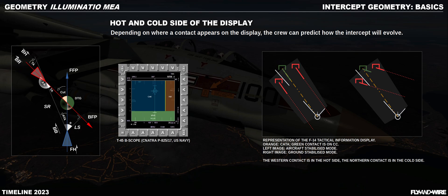CC captures TA and acts as a delimiter between cold and hot side. On the B-scope — and here we see an image taken from the P825-17 based on the T-45 — the abscissa represents the ATA and the ordinate represents the range. I've chosen this image because it resembles the Hornet and the Fighting Falcon's display more than the Tomcat's DDD would.